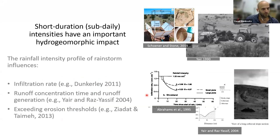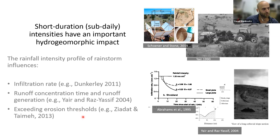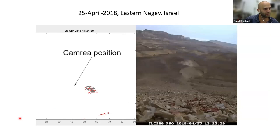These short-duration intensities are important especially for surface processes. Many pioneer experimental works in deserts, as well as more recent studies, have pointed out that rainfall intensity and the profile of rainfall intensities within storms influence infiltration rates, runoff generation, and the exceeding of erosion thresholds. I want to give an example by looking at this video and radar maps — this combined video will show on the left radar maps for a very short event in the eastern Negev, and on the right a field picture from a timelapse camera installed in the field during this storm, with pictures corresponding to the same minutes as the radar data.